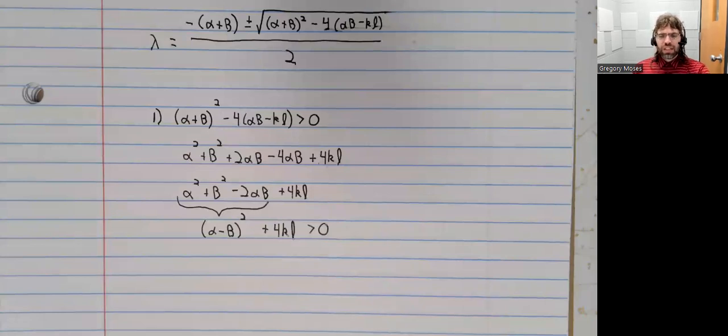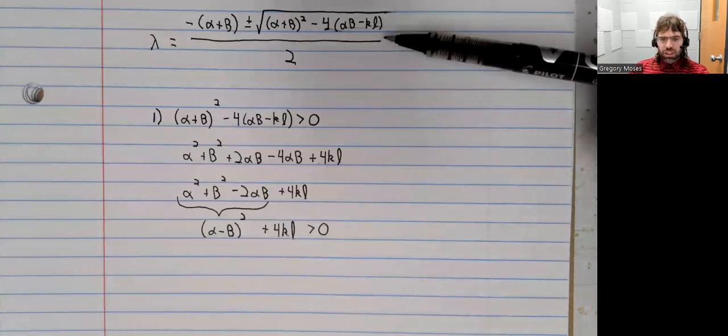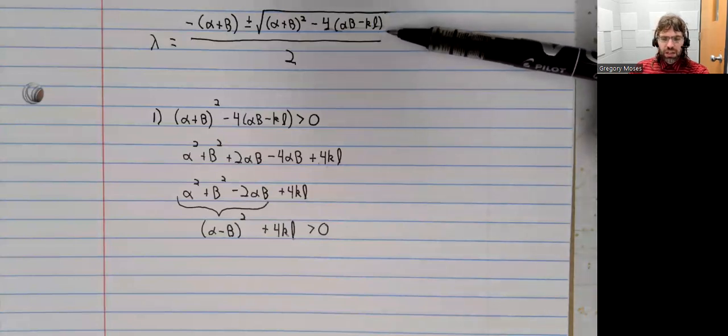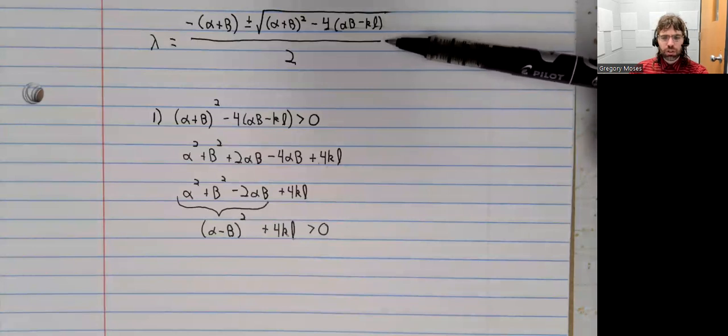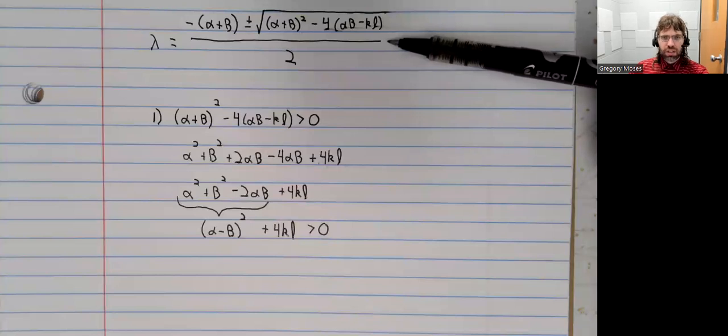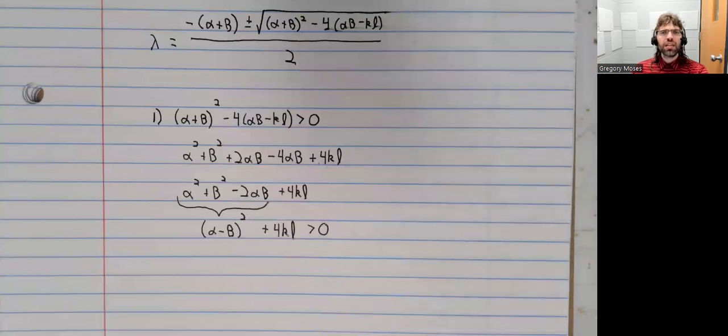And that leaves us with three possible cases. Both these roots are negative and we have an asymptotically stable node. Both of these are positive and we have an unstable node. Or one of them is positive and the other is negative and we have an unstable saddle.